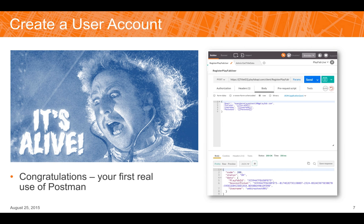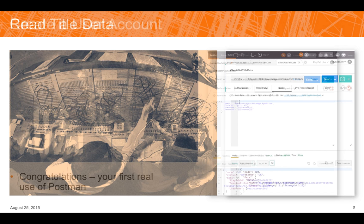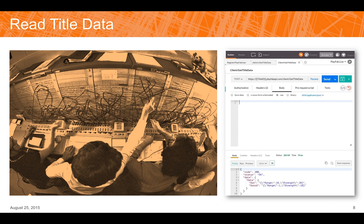Once you've got your user account created, you're able to read out your title data. Title data is used for configuration of your game — things like the strength of items, speeds of cars or planes — and you can change it on the fly. The body of the GetTitleData call is completely blank because nothing is needed to retrieve it. You can specify no key at all and get back all the keys set up for your title, or you can specify an individual key — like 'gun' — and pass in an array of keys to get only those back.